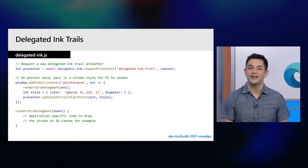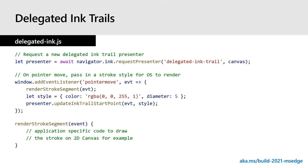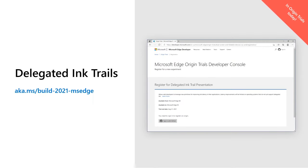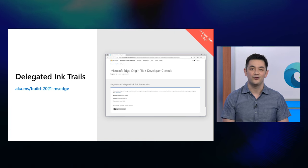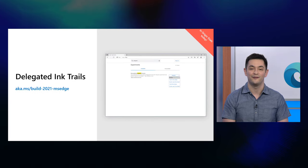One goal we had when improving inking latency was to make it as easy as possible for developers to take advantage of these improvements. Simply request a new delegated ink trail presenter, define an ink trail style for the OS to draw, and call update ink trail start point to start rendering delegated ink. We have an origin trial for an early implementation of delegated ink trails available for developers today, and we'd love your feedback on API ergonomics as well as prediction values, which can be configured in Edge flags.